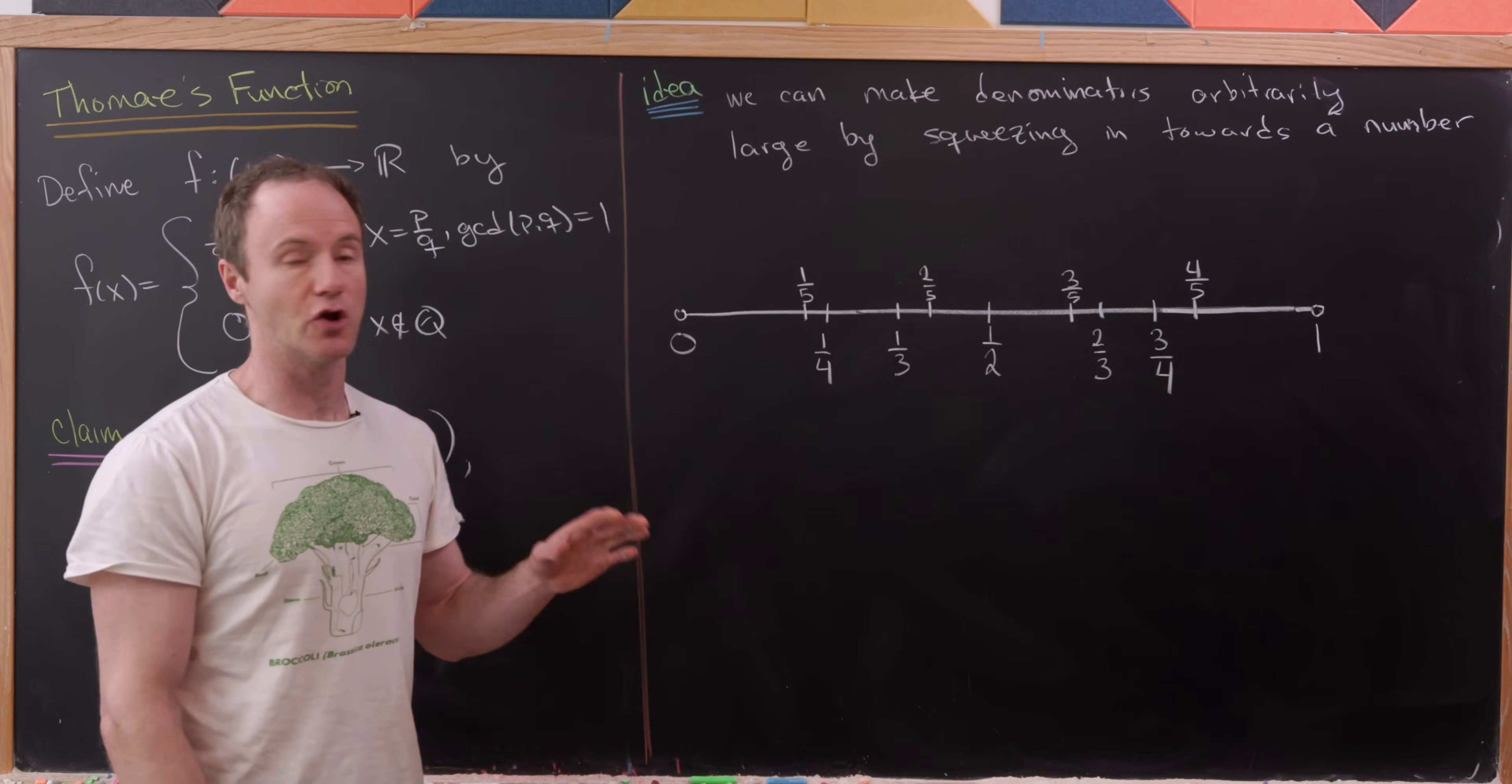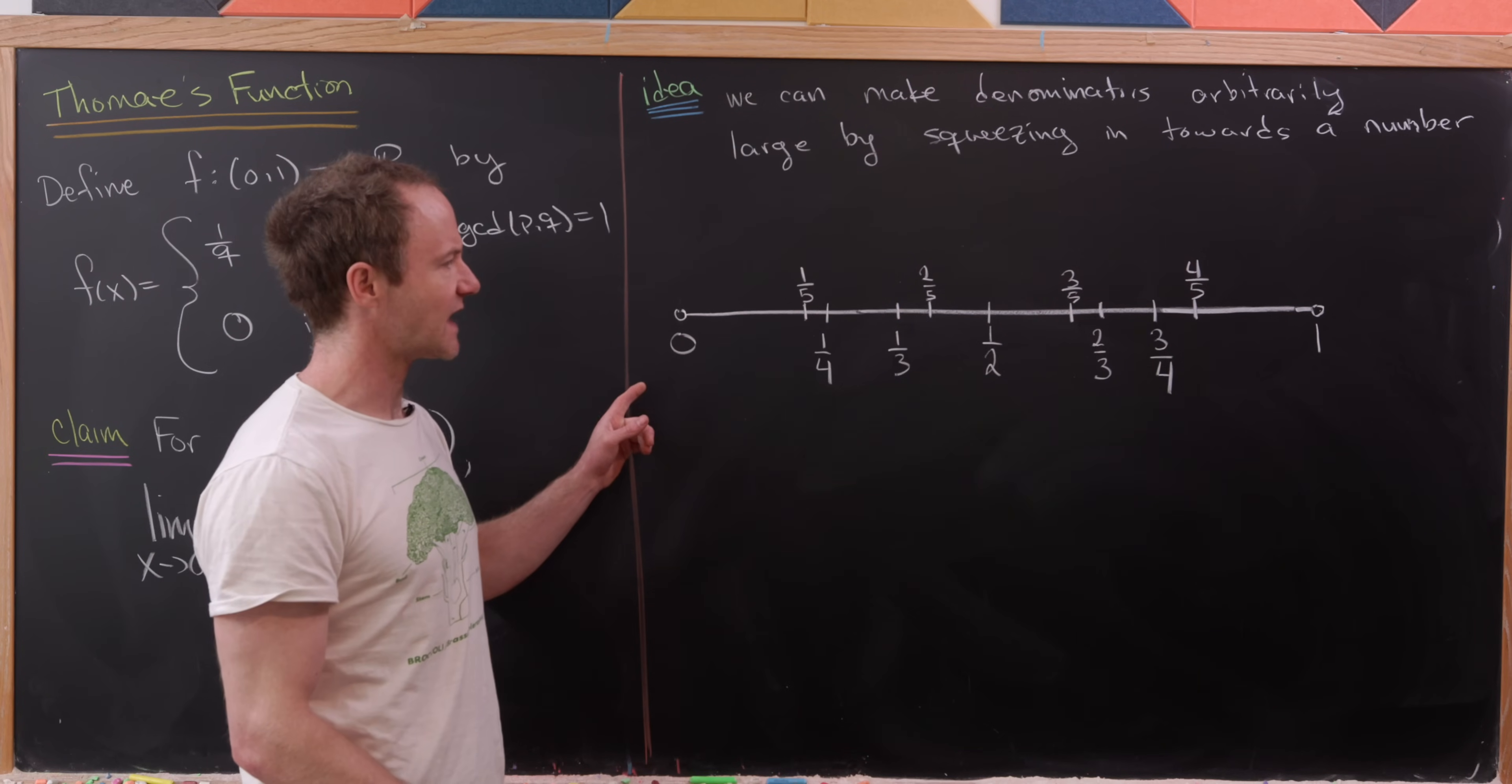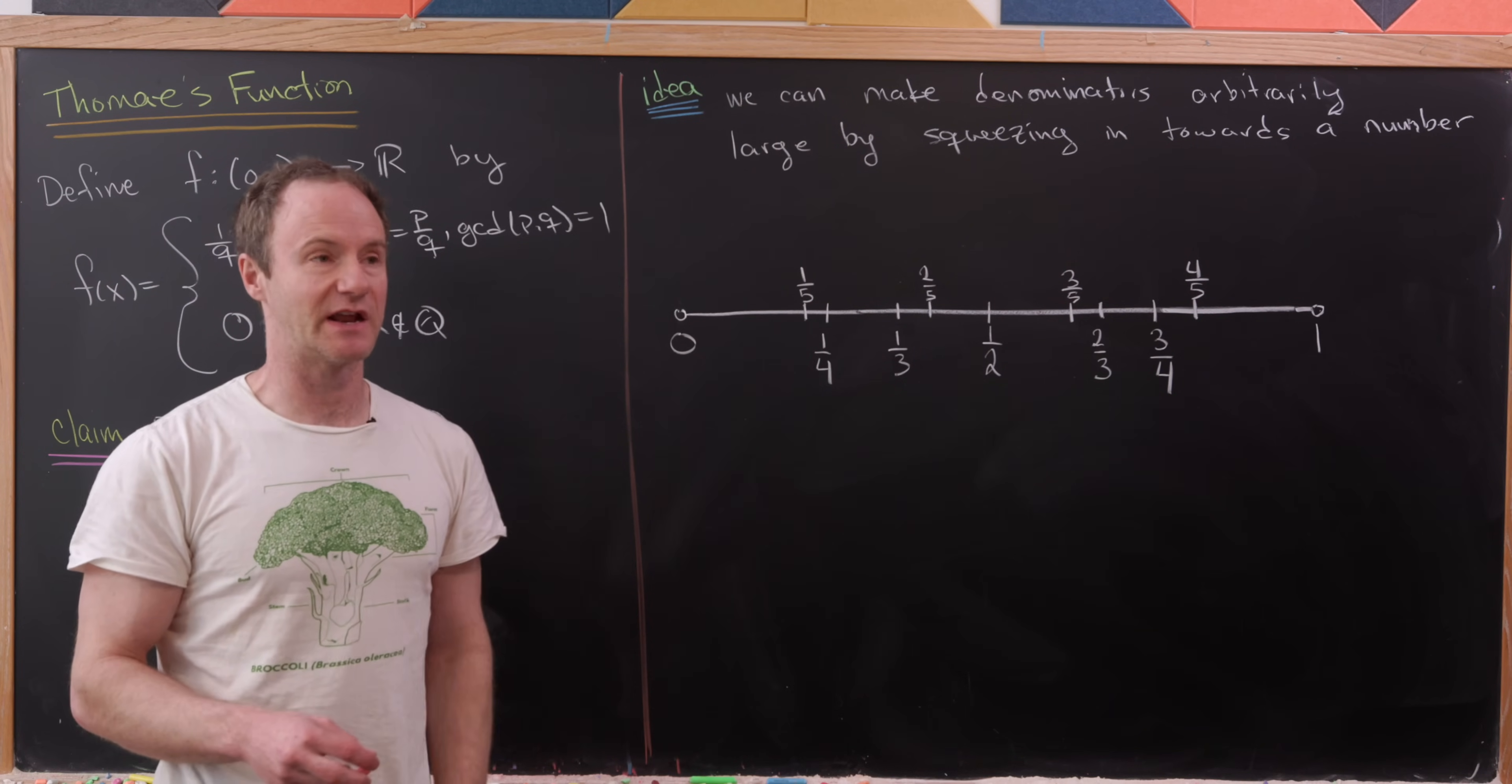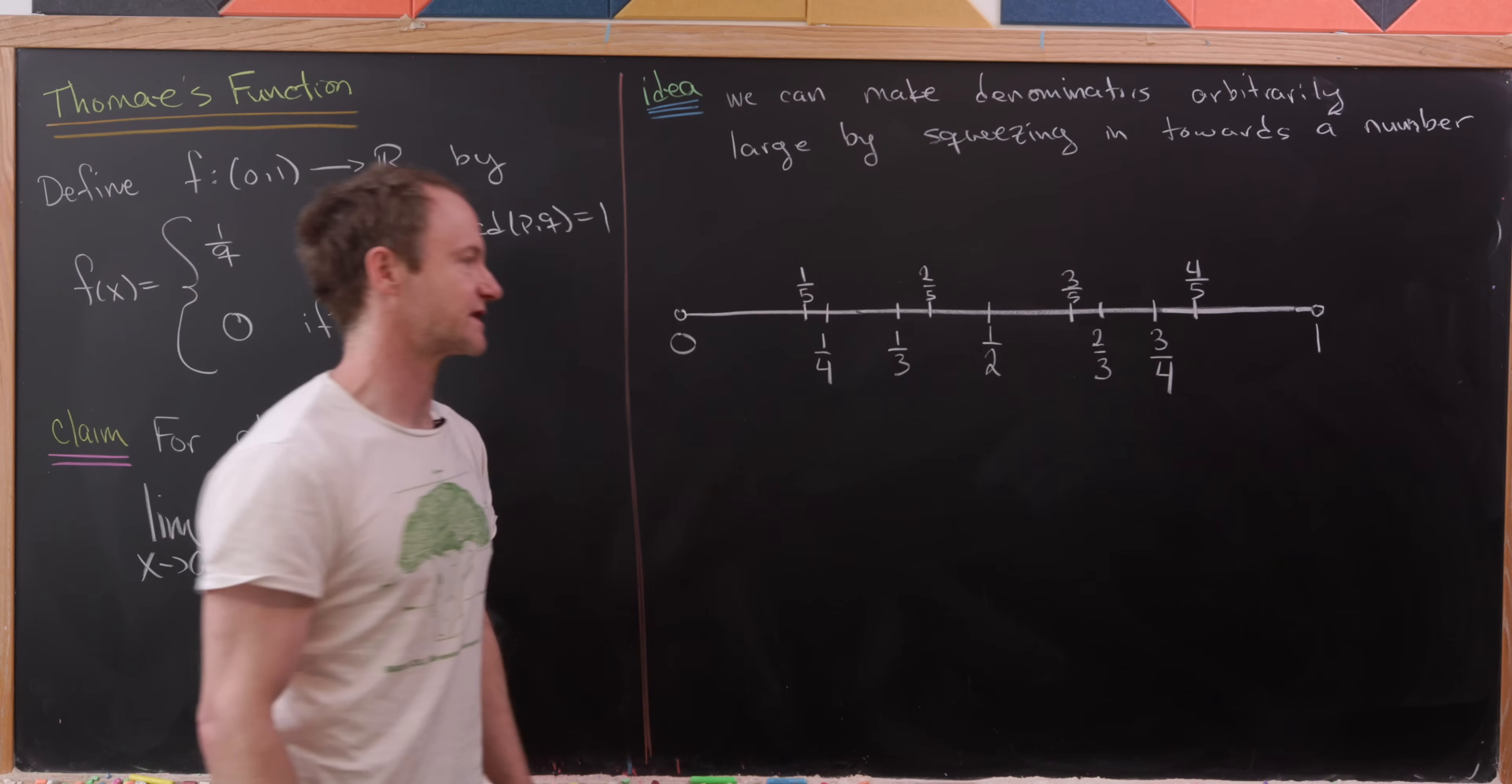And let's observe that no matter where I pick a number between 0 and 1, of course, as long as it's not equal to one of these rational numbers, I can make sure that the denominator is always bigger than or equal to six.